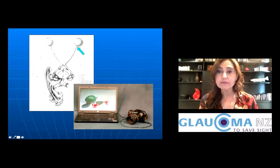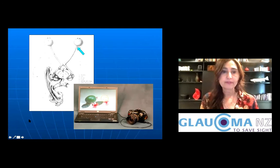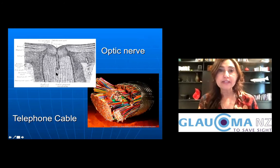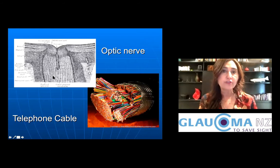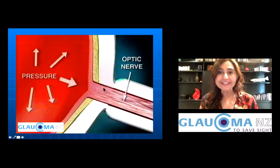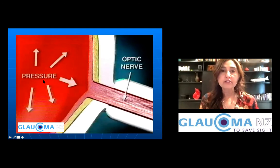The optic nerve connects the eyeball to the brain — very similar to a cable connecting a camera to a computer. It's actually not one nerve but is made of approximately one million nerve fibers, similar to a telephone cable with many individual cables running through it. The optic nerve is connected to the back of the eye, and glaucoma is the disease where the optic nerve succumbs to the pressure inside the eye.